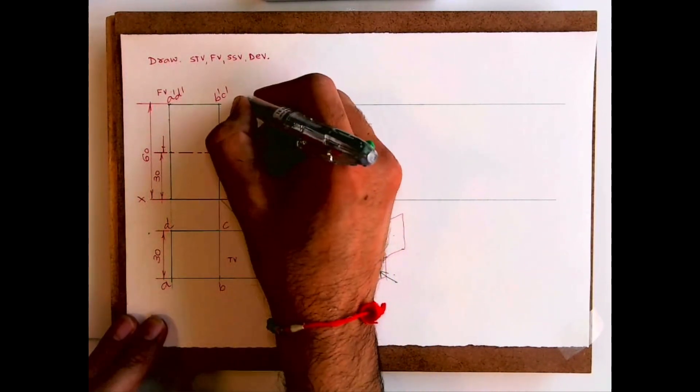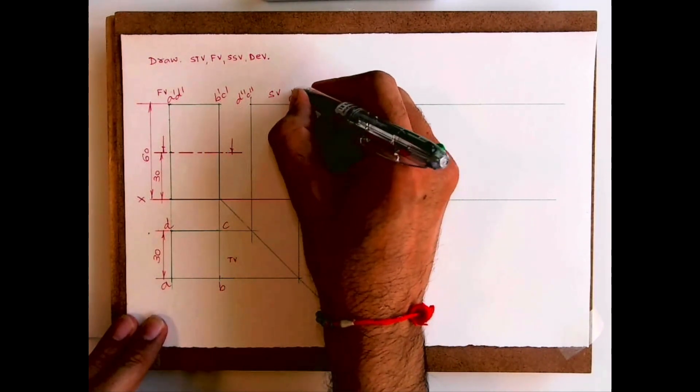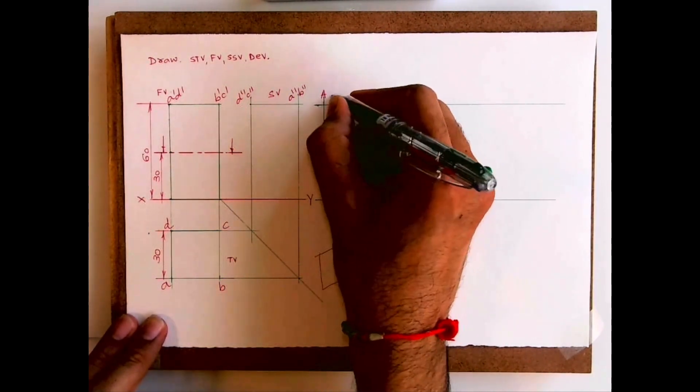This is the side view, so this is D double dash, C double dash, A double dash, B double dash.